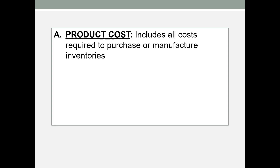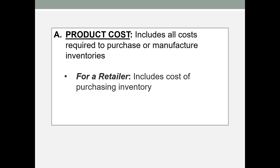A product cost includes any cost that is required to purchase or manufacture inventories. For a retailer, this would simply be the cost of buying the inventory. A retailer of office furniture might buy desks and resell them. If they buy that desk for $150, that's the product cost of the desk.